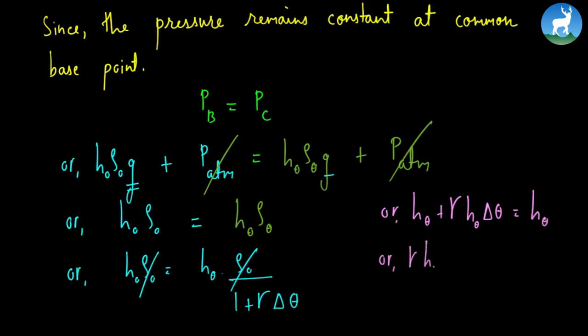Where Δθ equals θ minus θ₀. Gamma is the cubical expansivity, or coefficient of real expansion. Gamma is the coefficient of cubical expansion of liquid, also called absolute expansivity.